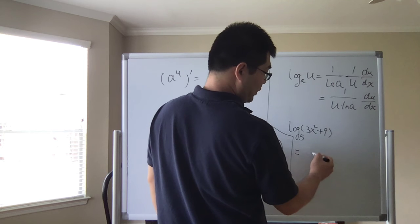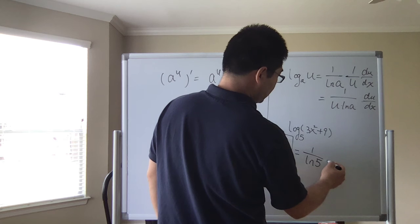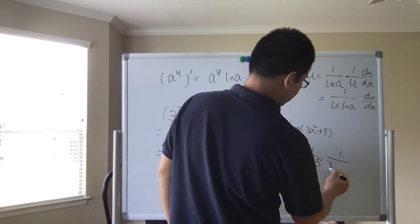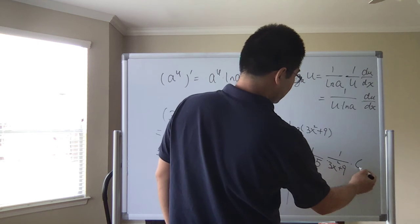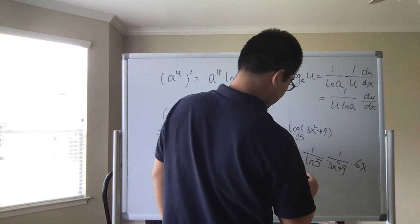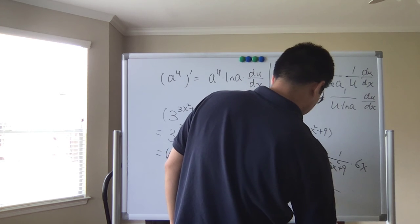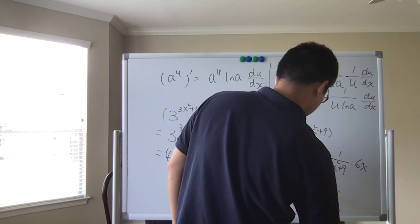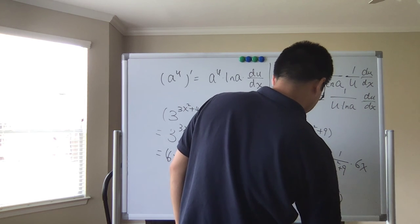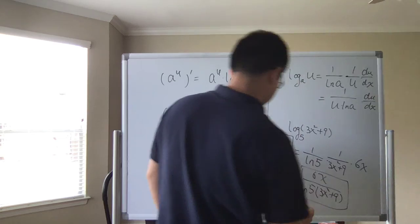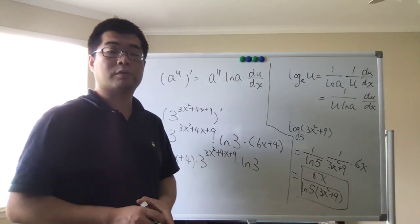Following the formula, the derivative is one over ln(5) times one over (3x² + 9), then times the derivative of the inside which gives us 6x. Putting it all together, the answer is 6x divided by (ln(5) times (3x² + 9)).